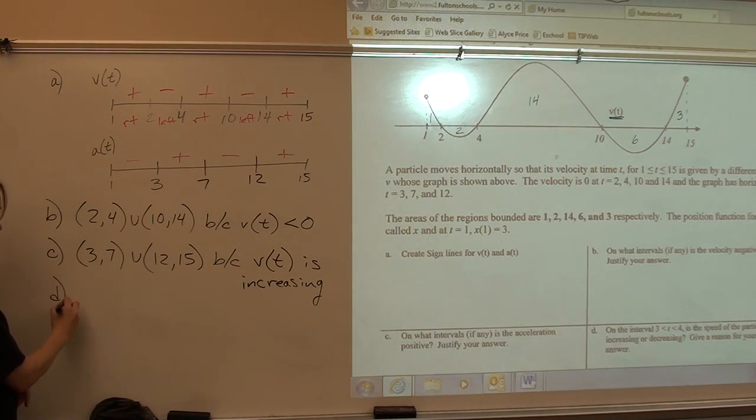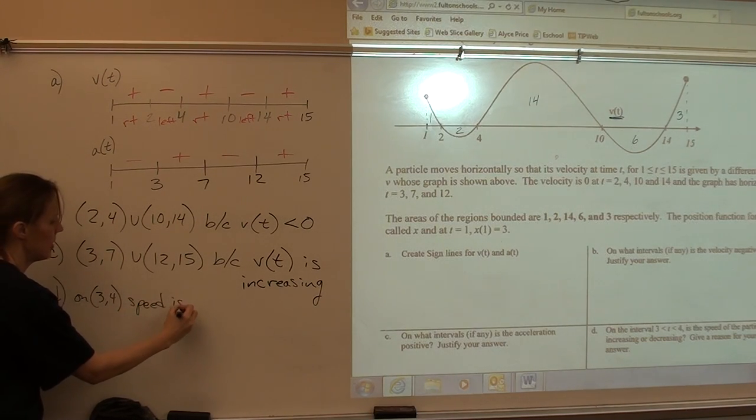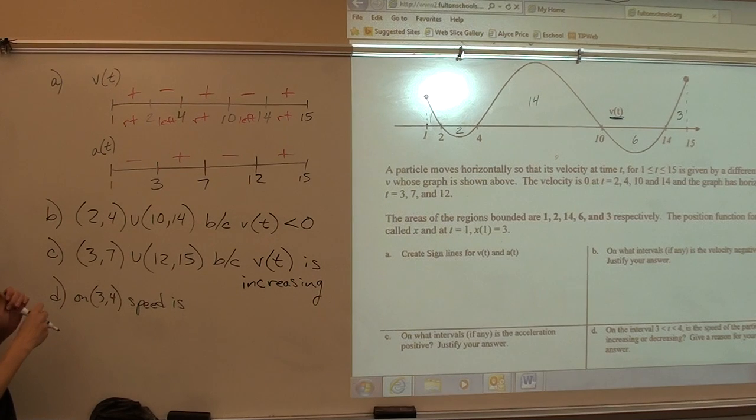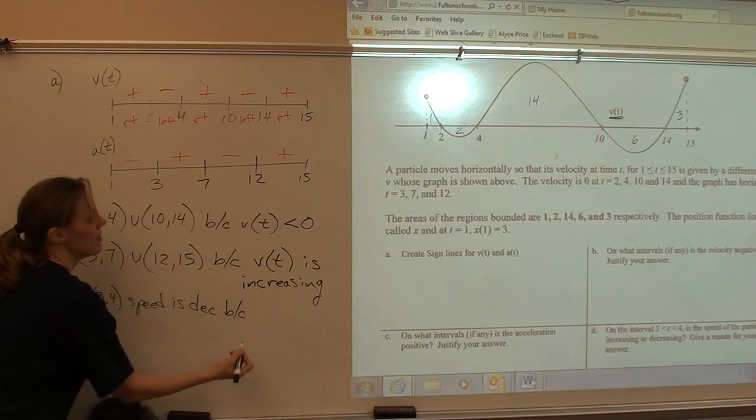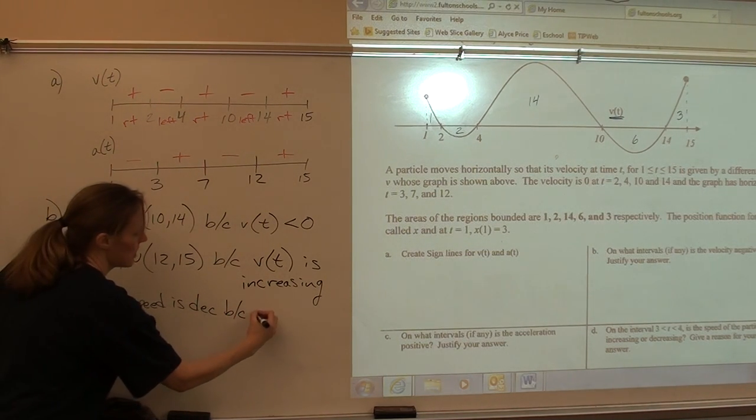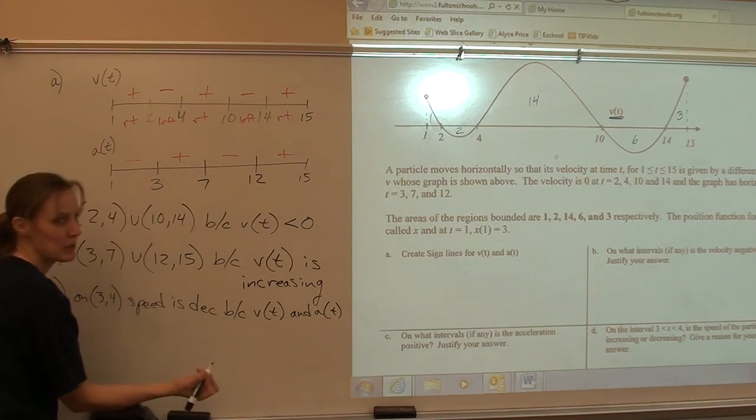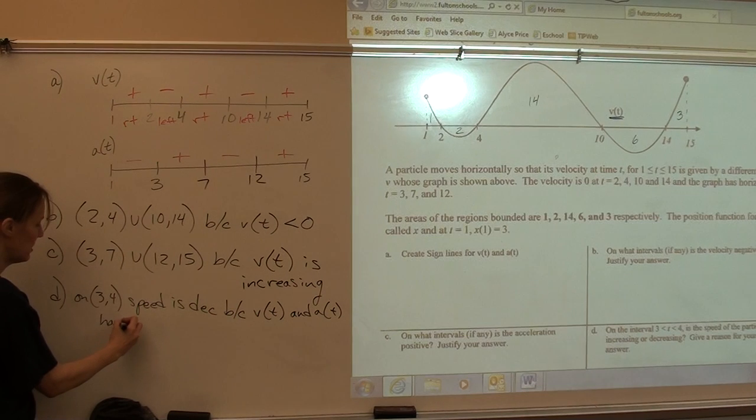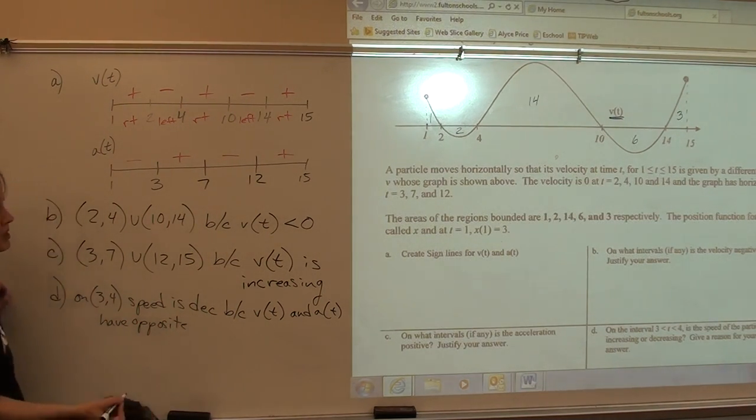Letter D, speed from 3 to 4, on 3 to 4, the speed is increasing or decreasing? Decreasing. How do you know it's decreasing? Because velocity is approaching 0. Good. And I'm just going to put because v of t and a of t have opposite signs, right? If you want to be specific and say what the signs are, that's okay, but you've got to make sure you're correct.